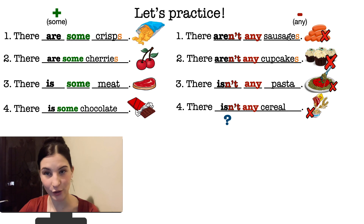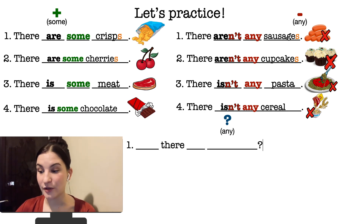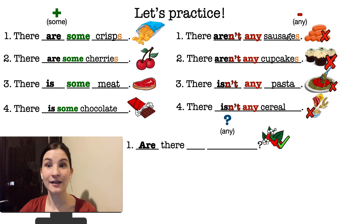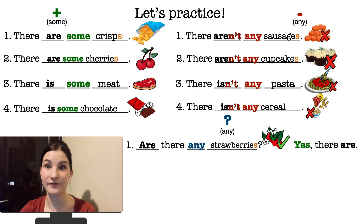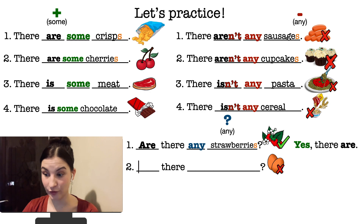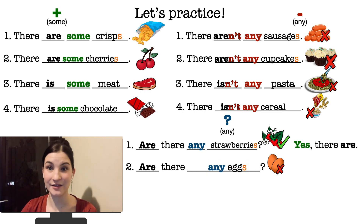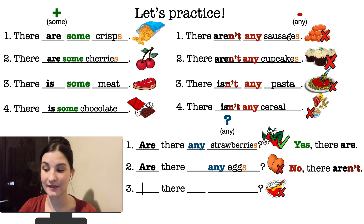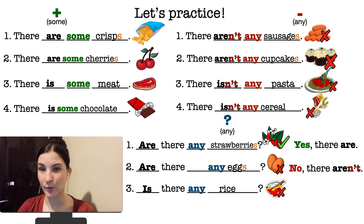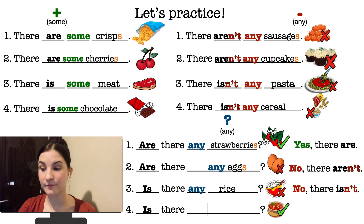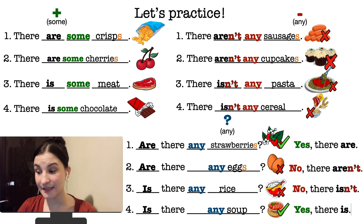Let's practice interrogative sentences — we use 'any' again. We put 'is' or 'are' at the very beginning. Strawberries are countable: 'Are there any strawberries?' And the answer — yes, there are. Are there any eggs? And the answer — no, there aren't. Rice is uncountable, so: 'Is there any rice?' No, there isn't. And: 'Is there any soup?' Soup is uncountable, so we put 'is'. Yes, there is.